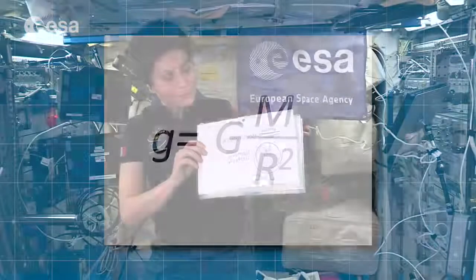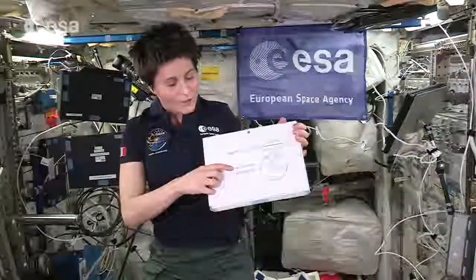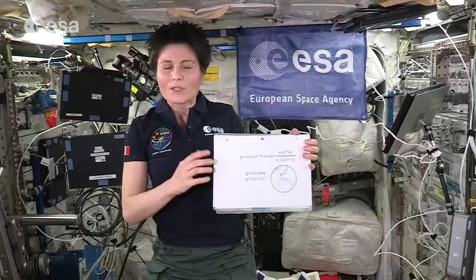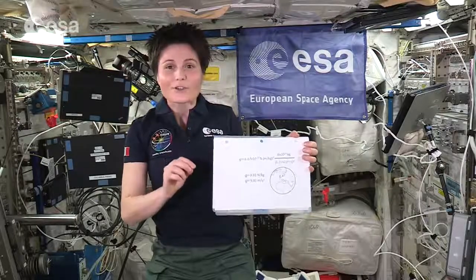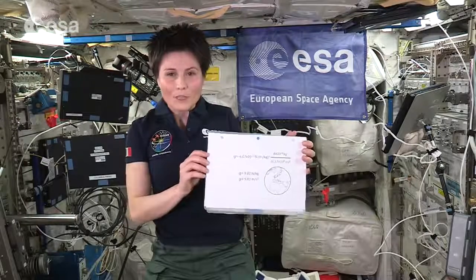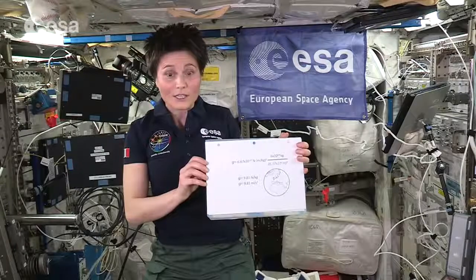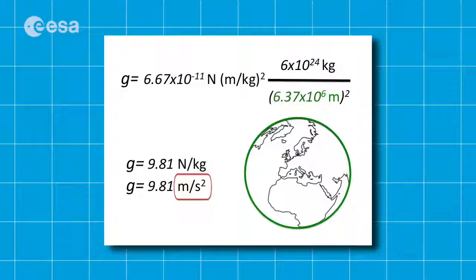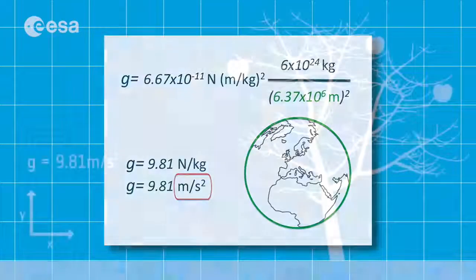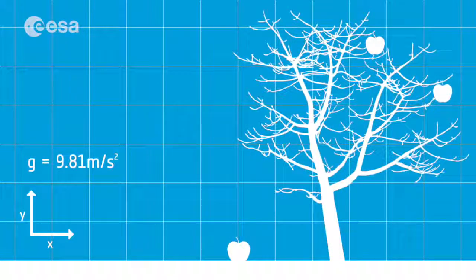Introducing those numbers, we determine small g as being equal to nine decimal eight one. That can be expressed in newtons per kilogram, which basically represents the amount of weight per kilogram of an object at that particular point in the gravitational field. Or equivalently, it can be expressed as meters per square seconds — the acceleration of a free-falling object in the gravitational field.